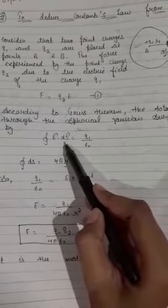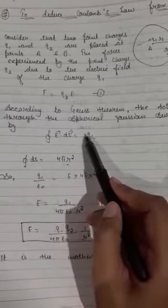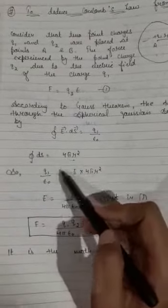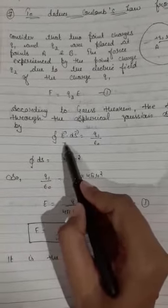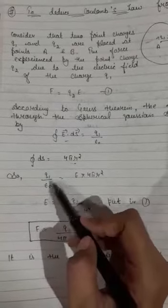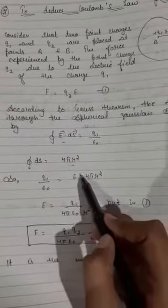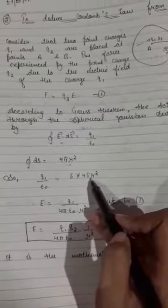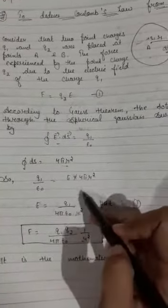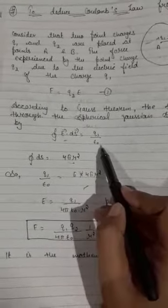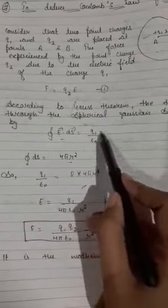And this I have already done, that E vector dot ds is equal to q upon epsilon not. So in place of that I can write q1/epsilon not, and E multiply by 4πr², same equation I have done over here. From this I have just substituted the value in place of ds.